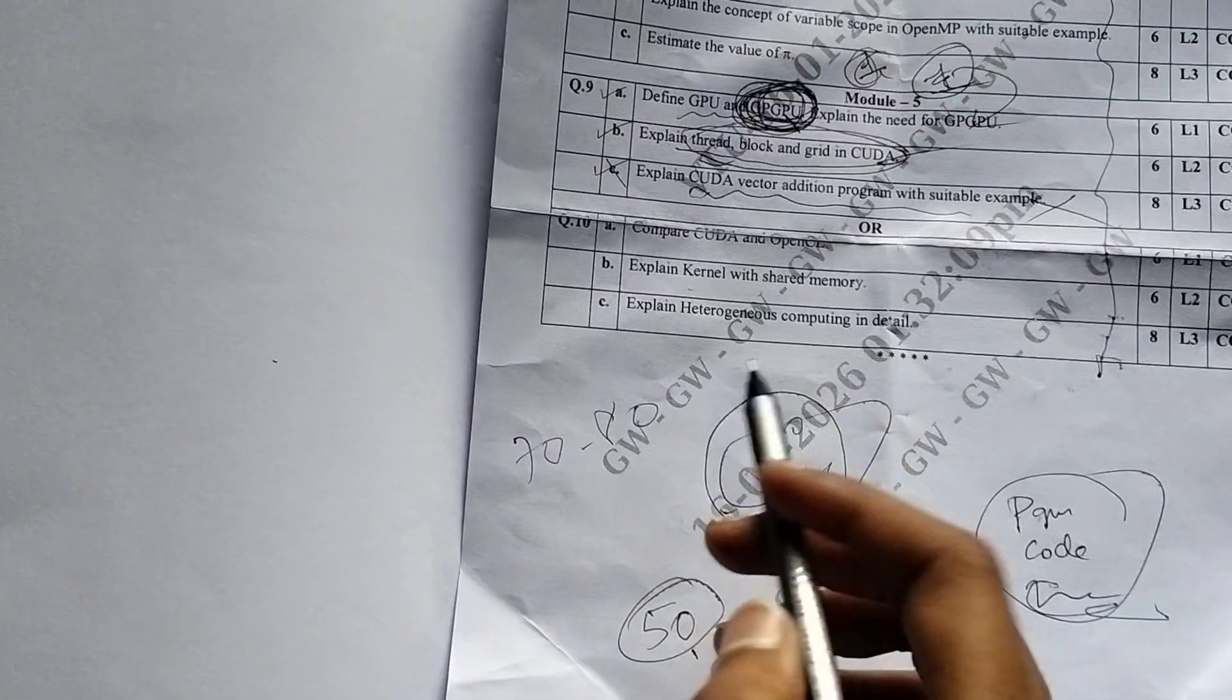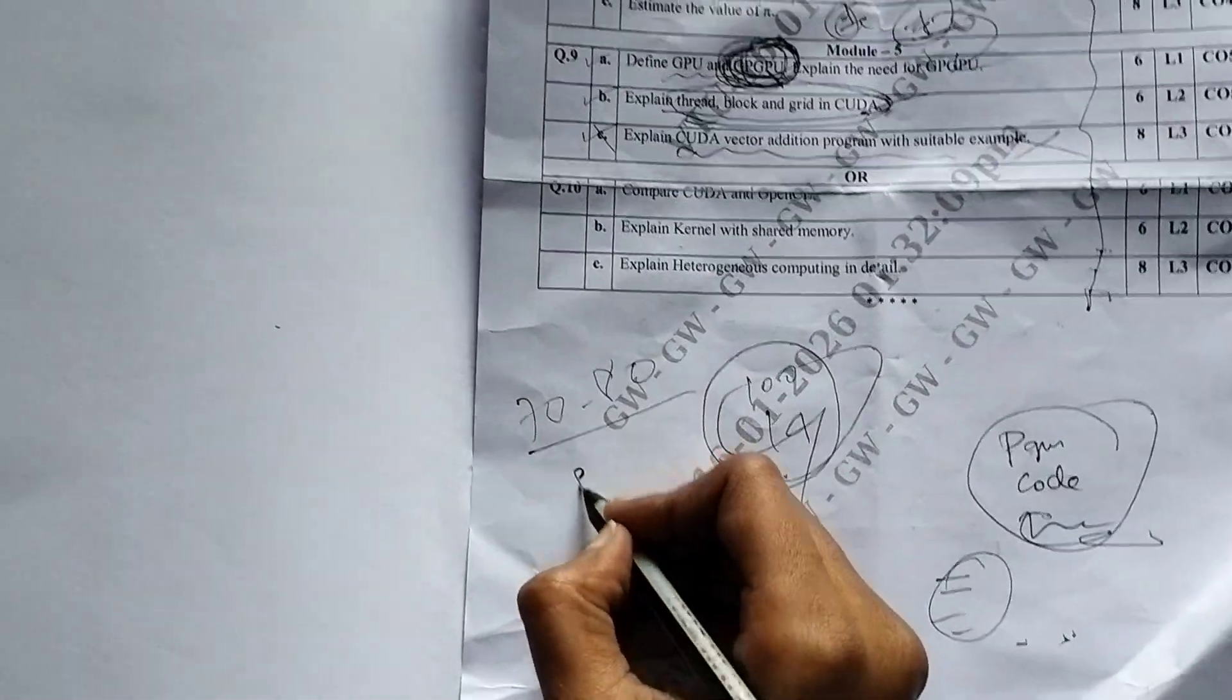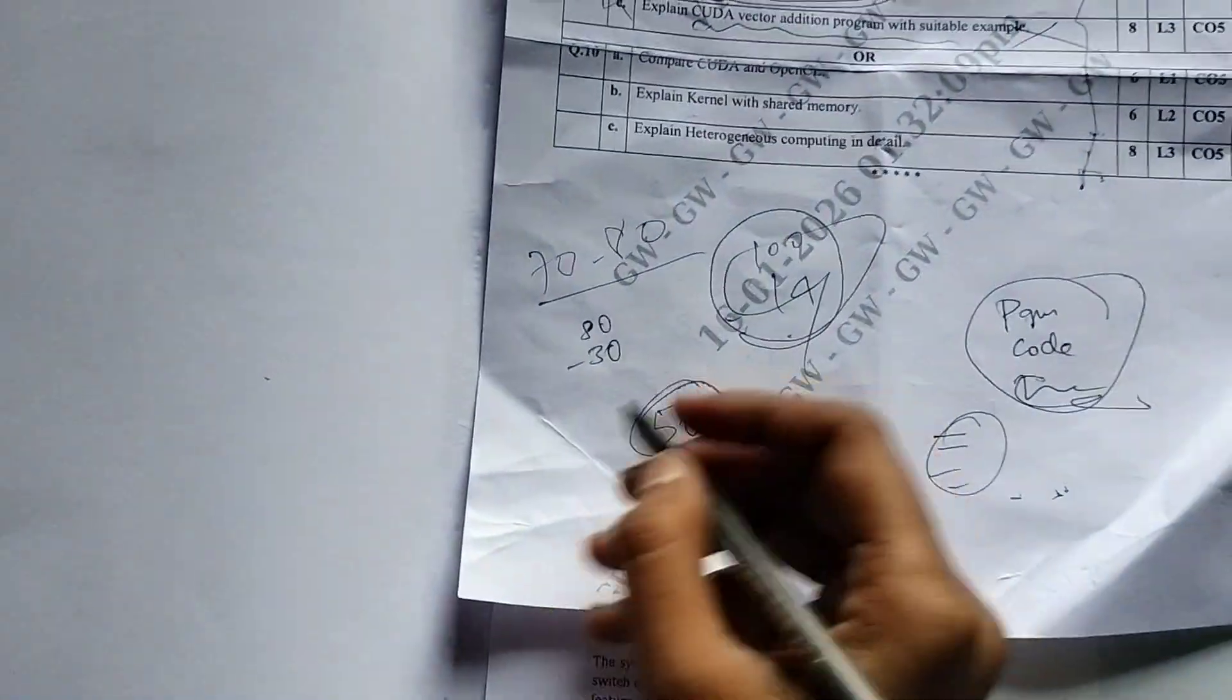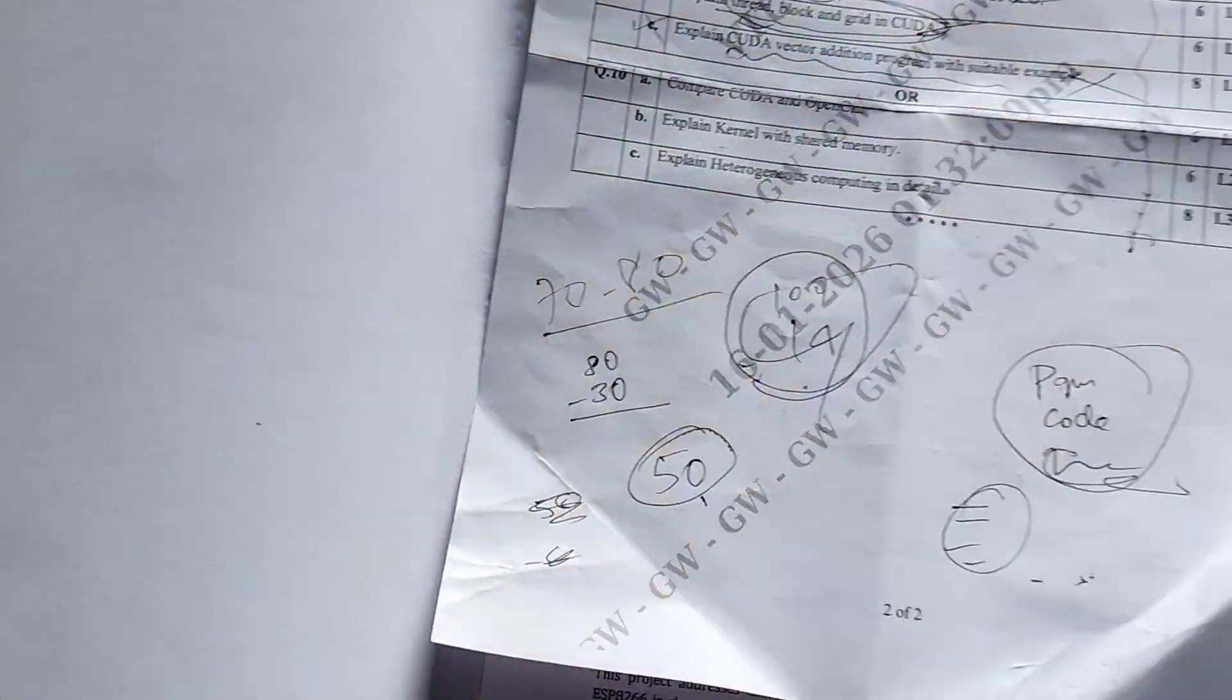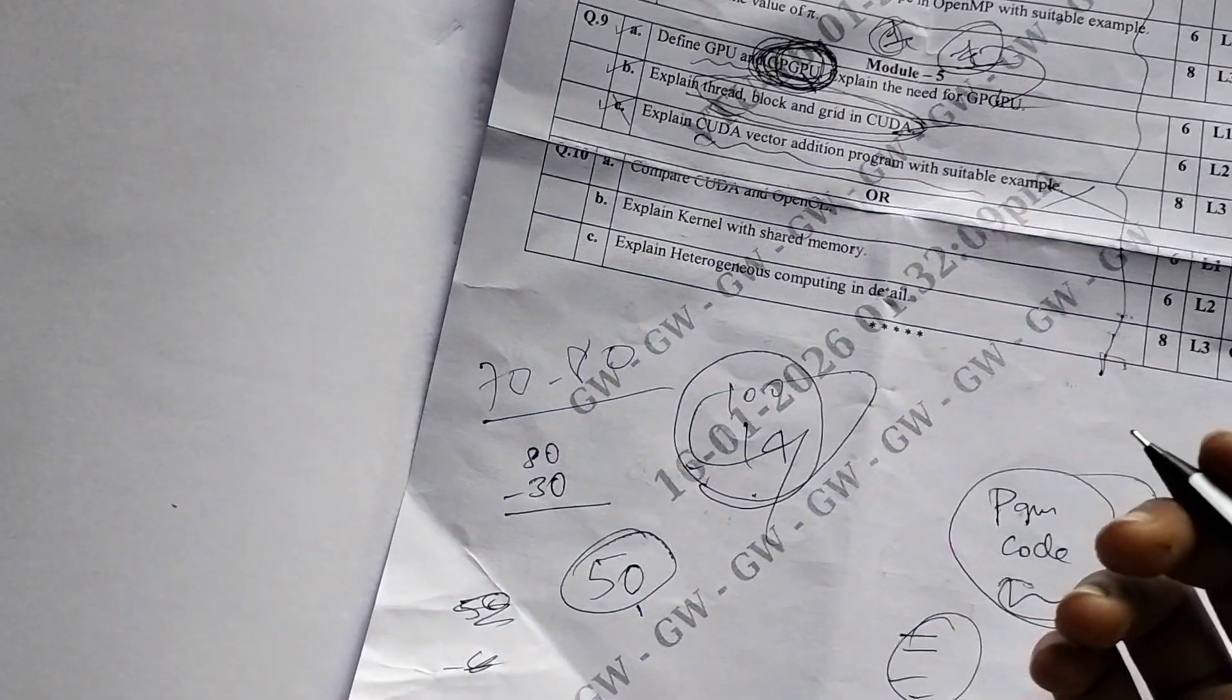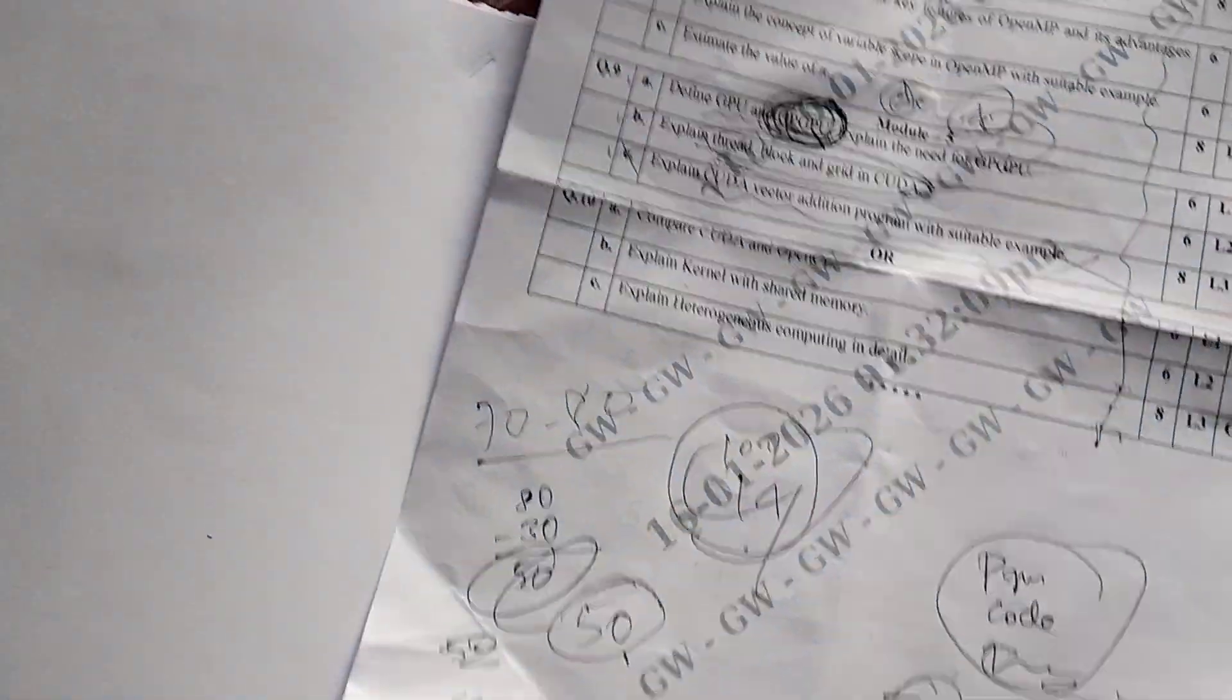I've attempted, and I may get - let's say I've attempted for 80 marks minus 30. Whatever you write, whatever marks you attempt, just reduce some amount because they will cut marks for the way of explaining. So I may get 50 in this exam. That is the minimum I'll be getting.